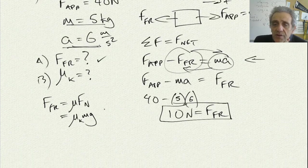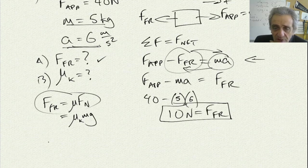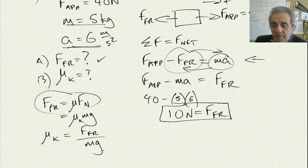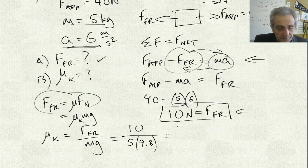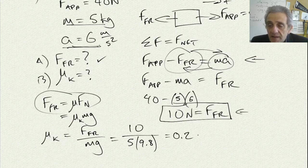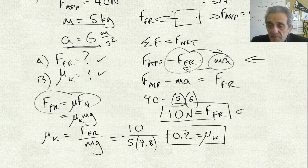Now I can use the friction equation to solve for part B. If I solve for μk algebraically, I get it equals friction divided by mg. Using my friction force from part A divided by mg, I end up with 0.2 as my coefficient of friction. Part B is done as well.